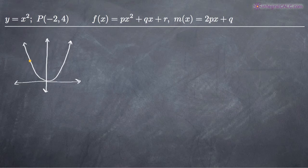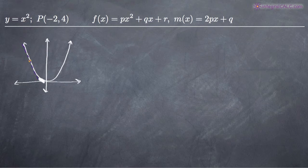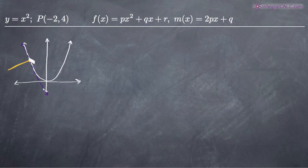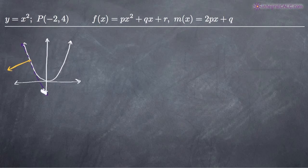The tangent line is going to run close to the graph and skim it, intersecting only at the point (-2, 4). The normal line is the line that is perpendicular to the tangent line — at a 90 degree angle from the tangent line. So this would be the normal line to the curve at the point (-2, 4), and we've been asked to find its equation.